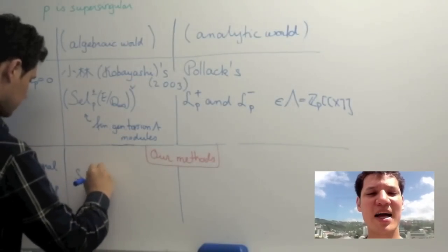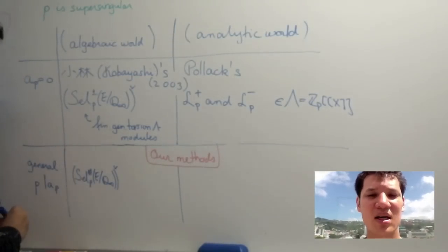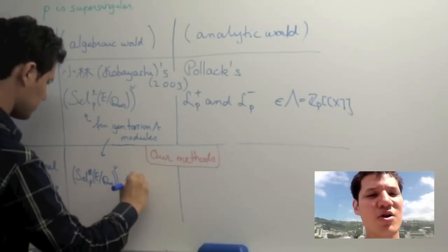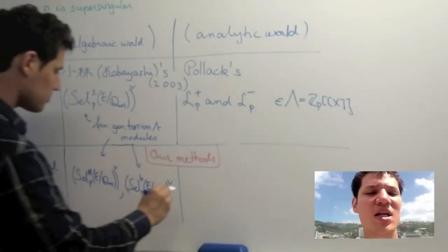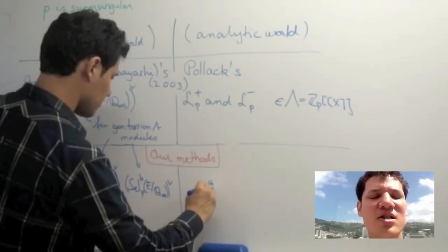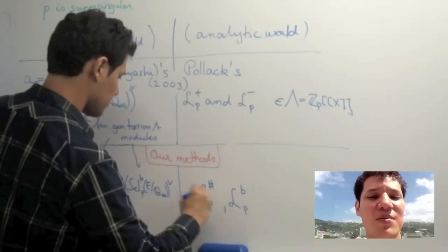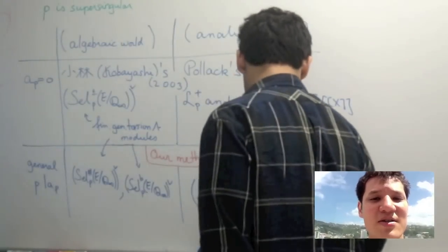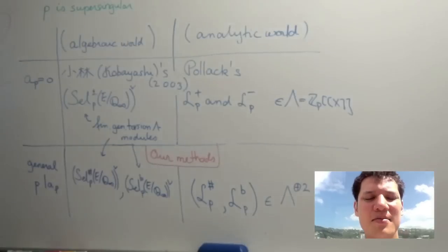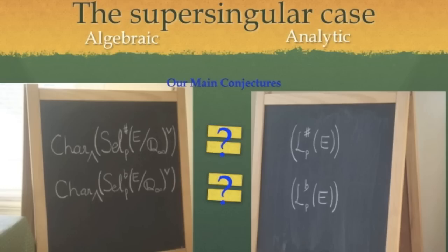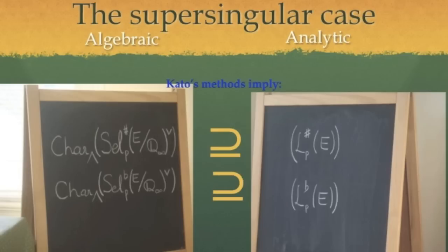We construct sharp and flat Selmer groups, whose duals are torsion and finitely generated as lambda modules and coincide with Kobayashi's plus minus Selmer groups when AP is equal to 0. On the analytic side, we generalize Pollack's results and construct pairs of p-adic L functions, LP sharp and LP flat. These p-adic L functions coincide with Pollack's when AP is equal to 0 and are elements of lambda. Now we're ready to play the game. Our main conjectures ask whether the characteristic ideals of the duals of our Selmer groups are generated by our p-adic L functions. We can prove half the main conjecture by invoking methods of Kato. This had already been done by Kobayashi when AP is equal to 0.